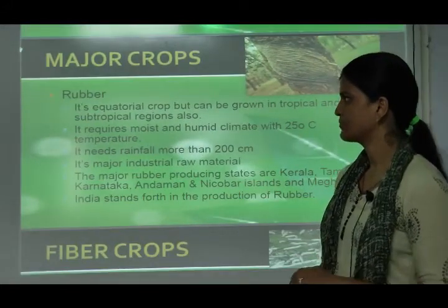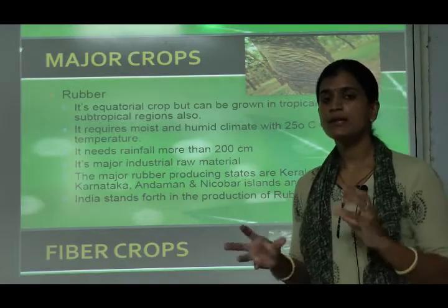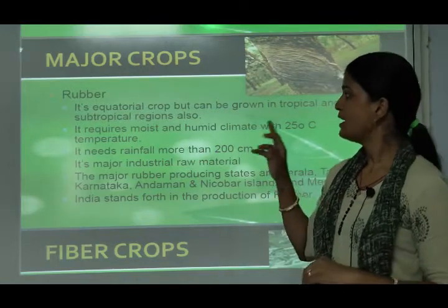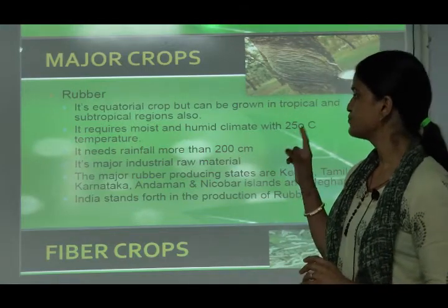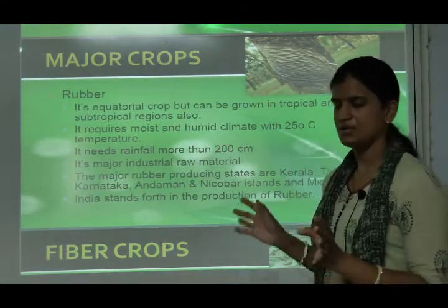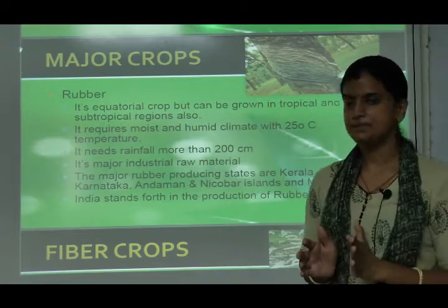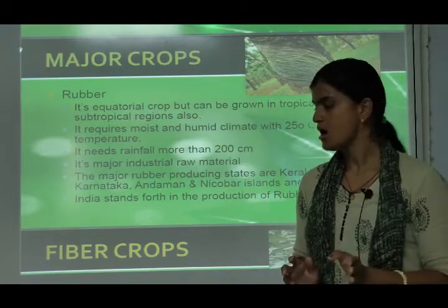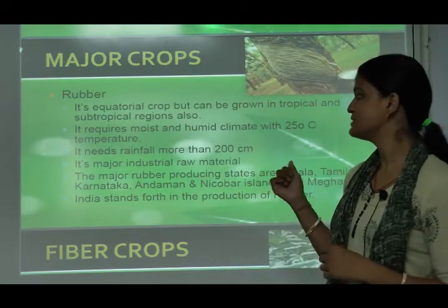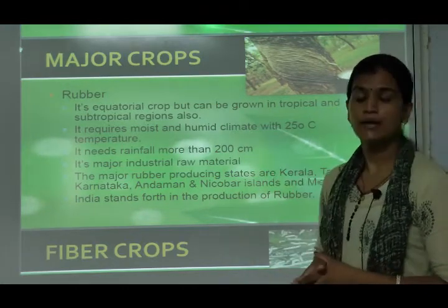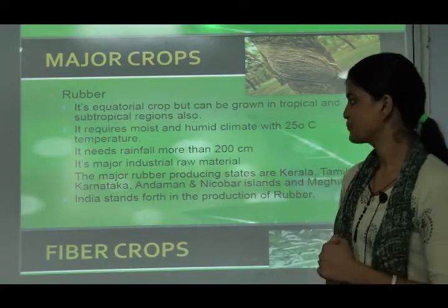Rubber is an equatorial crop but can also be grown in tropical and subtropical regions. It requires a moist and humid climate with a temperature of 25°C and rainfall of more than 200 centimeters. Rubber is a major industrial raw material used by many manufacturing industries.